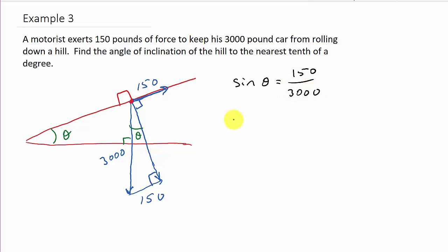So, we get theta is equal to, and then that's going to be the inverse sine of 150 over 3000.